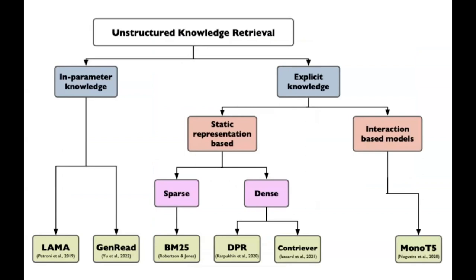We use this benchmark to evaluate a bunch of options to retrieve knowledge from Wikipedia. I divide these approaches into two main groups. There are models that have all knowledge inside their parameters — like ChatGPT, which you ask questions and it works to some extent. Or you have models with explicit access to knowledge, which can be static: you precompute an index, precompute dense vectors, and then use those for inference, such as a sparse approach like BM25 or a dense approach. The main problem I see is that these representations are not truly contextual — they cannot take into account the question when creating representations, so they're static no matter what the input is.